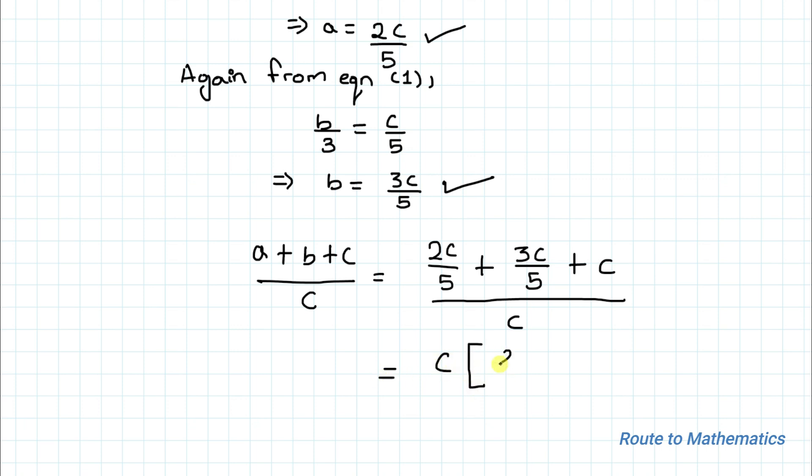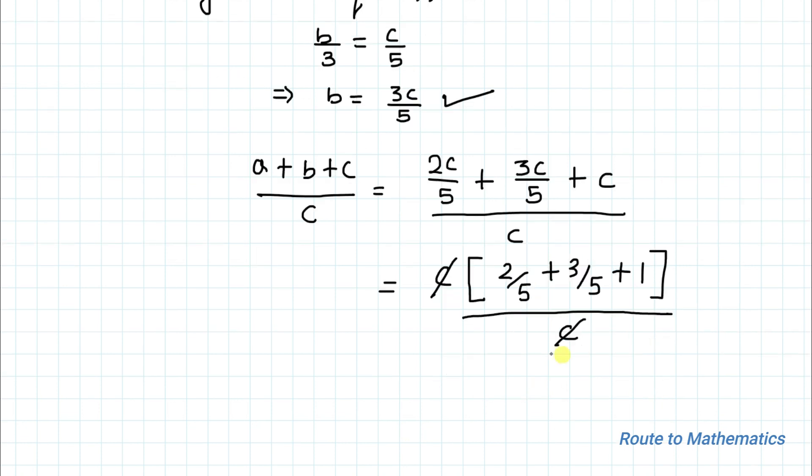So we have c(2/5 + 3/5 + 1) divided by c. Let's cancel out the c in numerator and denominator. So now we have only 2/5 + 3/5 + 1.